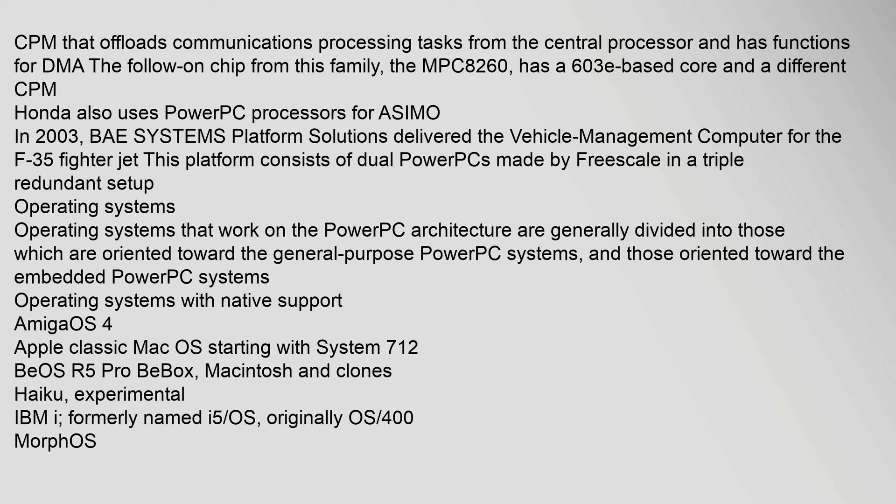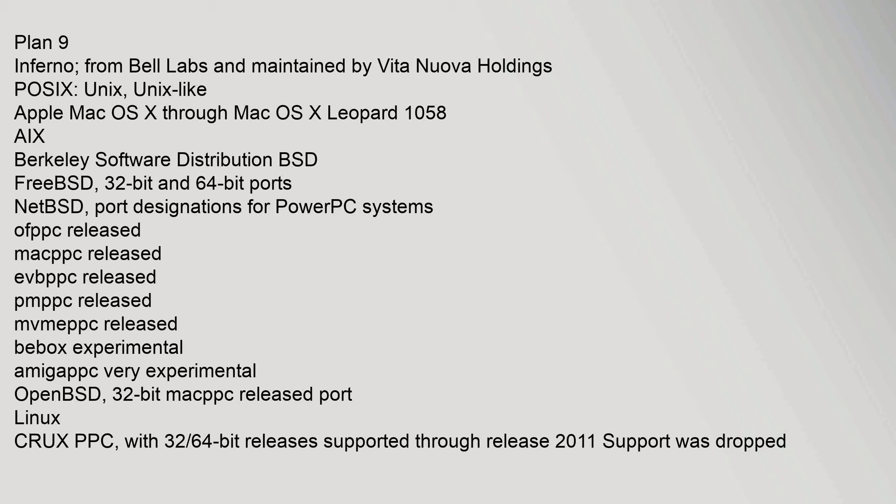Additional OS support includes MorphOS, Plan 9, Inferno from Bell Labs maintained by Vita Nuova Holdings, and POSIX/Unix/Unix-like systems including Apple Mac OS X through Mac OS X Leopard 10.5. BSD variants include FreeBSD with 32-bit and 64-bit ports, and NetBSD with port designations for PowerPC systems including OFPPC, macppc, evbppc, pmppc, mvmeppc, and others. OpenBSD supports 32-bit macppc as a released port. Linux distributions with PowerPC support include Crux PPC, with support through release 2011 then dropped from subsequent releases, and Debian, which removed PowerPC as a release target from Debian 9 on October 31, 2016.